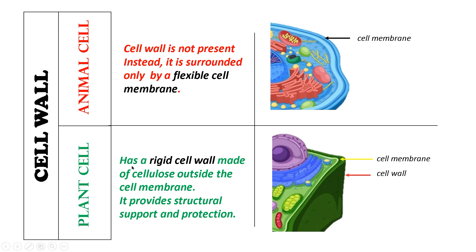On the other hand, plant cells have a rigid cell wall made of cellulose outside the cell membrane, and it provides structural support and protection to the plant cell.